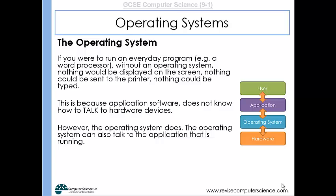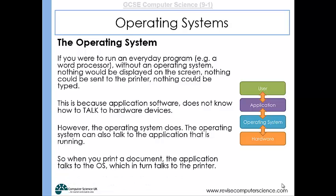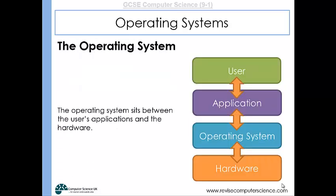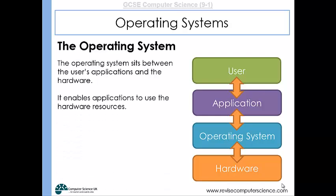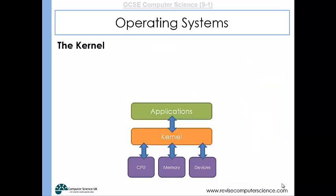The operating system can also talk to the application that's running. So when you print a document, the application talks to the operating system, which in turn talks to the printer. In that way, the operating system bridges the gap between hardware and the applications. Operating systems sit between the user's applications and the hardware, enabling applications to use the hardware resource.